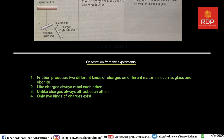Observation four: only two kinds of charges exist — positive charge and negative charge. Protons are positively charged and electrons are negatively charged; we will discuss that in the next lecture, where we will also perform an experiment of charging by friction. Stay tuned and don't miss it. If you haven't subscribed to my channel, please subscribe and press the bell icon so you will be informed when I upload a new video. Thank you very much for your time. Allah Hafiz.